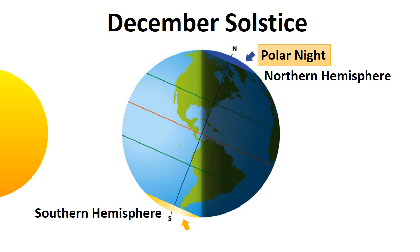When Earth's axis is tilted away from the sun in the December solstice, the sun does not rise above the horizon. At that time, the Polar Circle experiences night for 24 hours — that is called Polar Night.